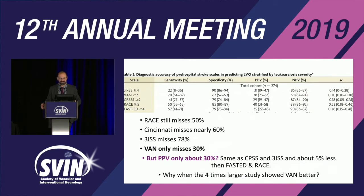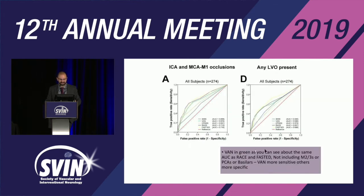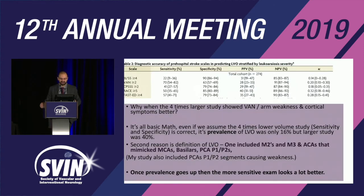You can't be sensitive and specific at the same time. Looking at the area under the curve, VAN, FAST-ED, and RACE perform similarly overall, but one is more sensitive and one is more specific. The question is whether you want to over-triage patients or not. The definition of LVO also matters — some studies include M2s, M3s, ACAs, A2 clots, basilar and PCA occlusions.